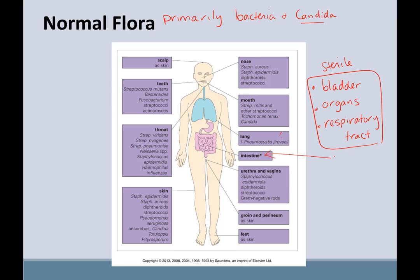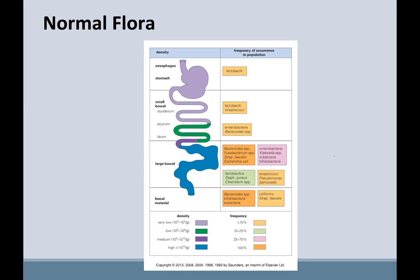Your intestinal system is a huge source of normal flora. Pound for pound, most of the feces you excrete is actually bacteria. What's interesting is Helicobacter pylori, which has a bad reputation for causing ulcers and stomach cancer — we think it used to actually be part of our normal flora. As we changed our sanitary conditions, it became more of an opportunistic infection. There's interesting research ongoing as to whether it's good or bad to be colonized by Helicobacter pylori.